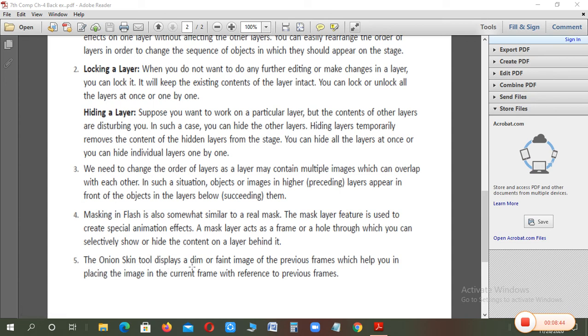What is onion skin tool used for? This shows your image in dim or faint of previous frames, which helps you in placing the image in the current frame with reference to the previous frame. Onion skin tool with the reference of previous frame helps you show your image in current frame. That's why onion skin tool is used in your timeline.